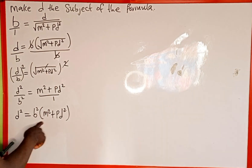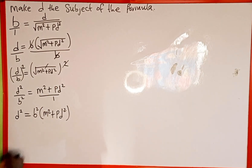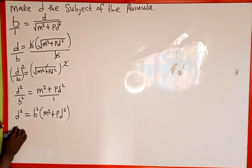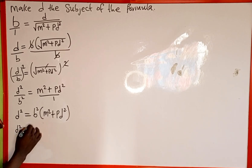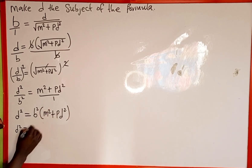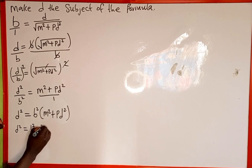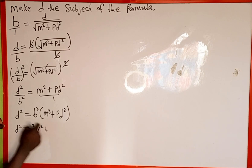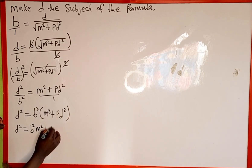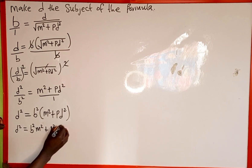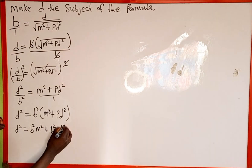The next thing we're going to do is to open this bracket. We have d squared equals b squared multiplied by m squared, which gives us b squared m squared, plus b squared multiplied by pd squared, which gives us b squared p d squared.